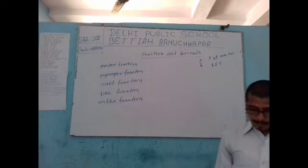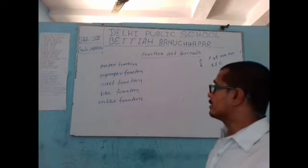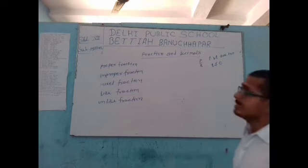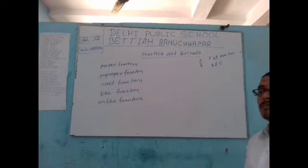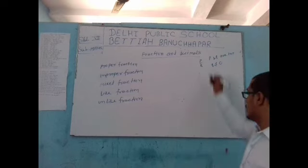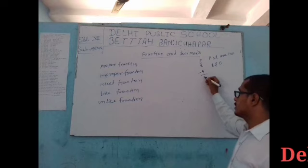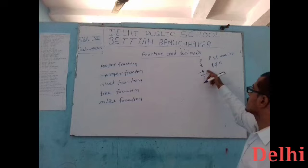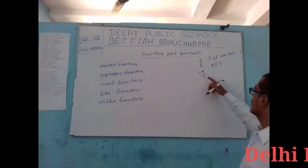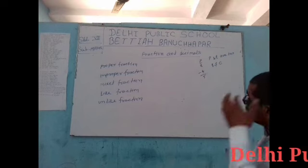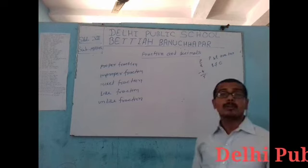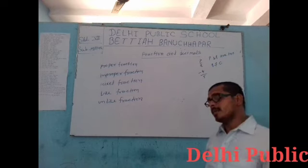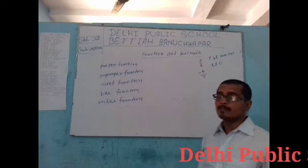So my question is: what is the difference between rational number and fraction? A rational number can be negative but a fraction can never be negative. For example, minus 4 by 5 is a rational number because minus 4 and 5 are both integers — but it is not a fraction because there is a negative sign. Fraction can never be negative.